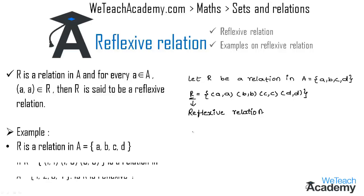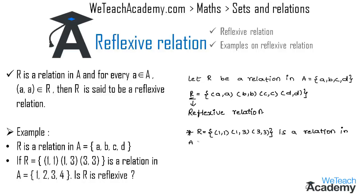Now let's consider another example. If R contains the ordered pairs (1,1), (1,3), and (3,3) in the set A = {1, 2, 3, 4}, we have to state whether R is reflexive or not.